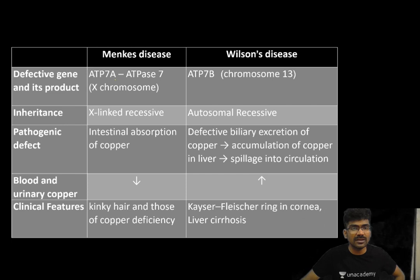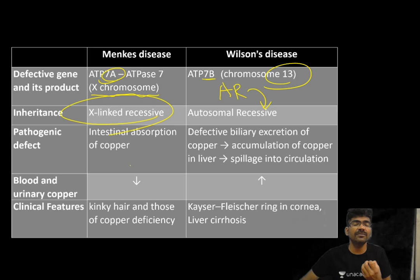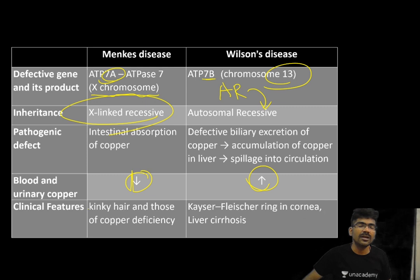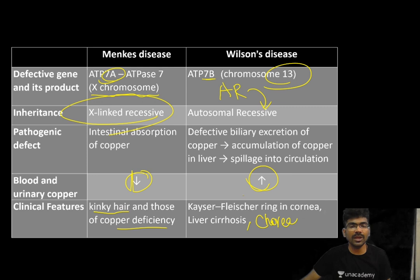Comparing Menkes and Wilson's: Menkes has a defect in ATP7A on the X chromosome (X-linked recessive), causing impaired intestinal copper absorption — resulting in decreased serum and urinary copper. Wilson's has a defect in ATP7B on chromosome 13 (autosomal recessive), causing impaired biliary copper excretion — copper accumulates in the liver and spills into circulation, increasing blood and urinary copper. Menkes features kinky hair and copper deficiency signs; Wilson's features KF rings in the cornea, liver cirrhosis, and neurological manifestations.